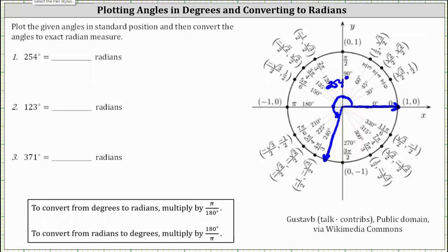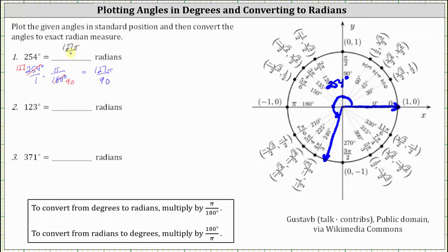To convert an angle in degrees to radians, we multiply by pi divided by 180 degrees. We write 254 degrees as a fraction with a denominator of one, and multiply by pi divided by 180 degrees. 254 and 180 share a common factor of two — there are 90 twos in 180 and 127 twos in 254. The units of degrees simplify out, and we have 127π divided by 90 radians. 254 degrees is exactly equal to 127π/90 radians.